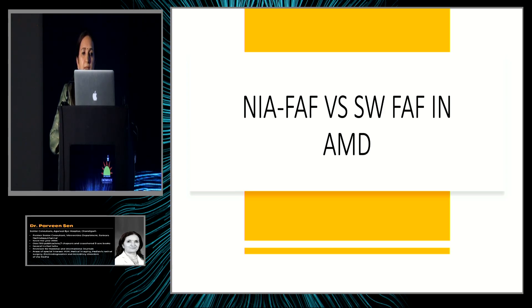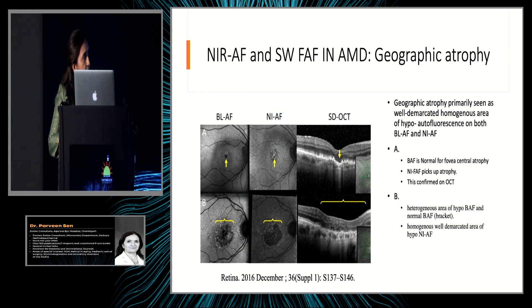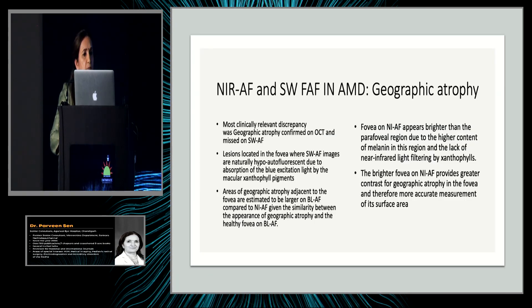In age-related macular degeneration, particularly foveal geographic atrophy, blue autofluorescence may be difficult to interpret because the atrophy will also appear hyporeflective — the same as the normal fovea — making it easy to miss. In contrast, with infrared autofluorescence the fovea is hyperreflective, so if the atrophy is hyporeflective it gets good contrast and shows up very well. This is how infrared scores over blue autofluorescence for detecting geographic atrophy in AMD.